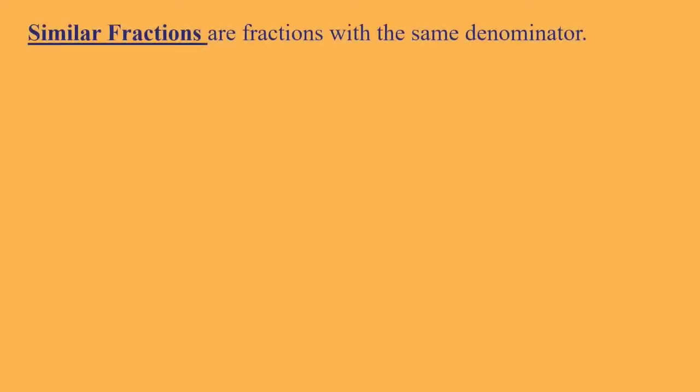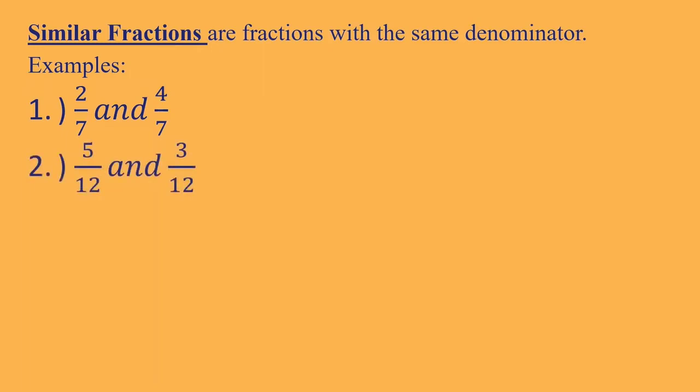Before we start with our main lesson, let us first try to differentiate similar and dissimilar fractions. So if we say similar fractions, these are fractions with the same denominator, like 2 over 7 and 4 over 7. They are similar because they have the same denominator which is 7. Another example of similar fractions are 5 over 12 and 3 over 12. They are similar because they have the same denominator which is 12. So if the denominator of two or more fractions is the same, they are said to be similar.